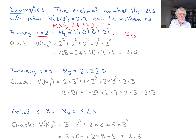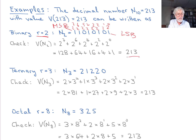We only add up the powers of 2 where the digit equals 1. Starting from the MSB: 2 to the 7 is 128, 2 to the 6 is 64, then 2 to the 4 is 16, 2 to the 2 is 4, and 2 to the 0 is 1. So 128 plus 64 is 192, plus 16 plus 4 plus 1: 16 plus 4 is 20, 192 plus 20 is 212, plus 1 equals 213. The decimal value of binary 11010101 is confirmed to be 213.